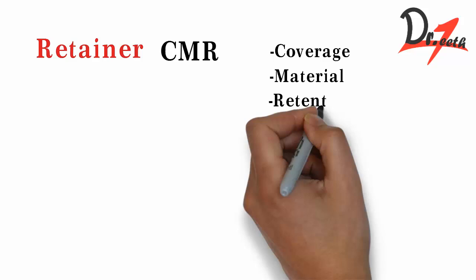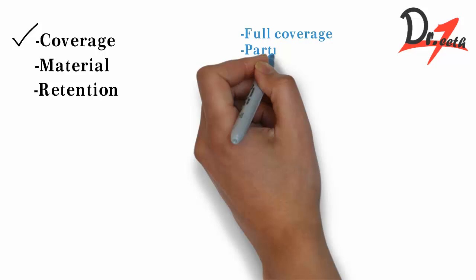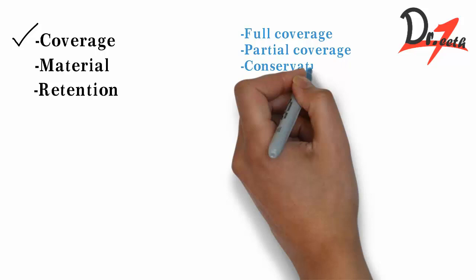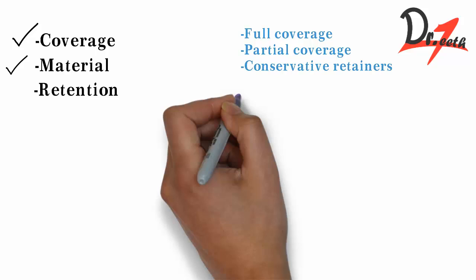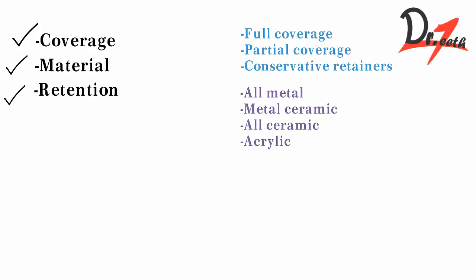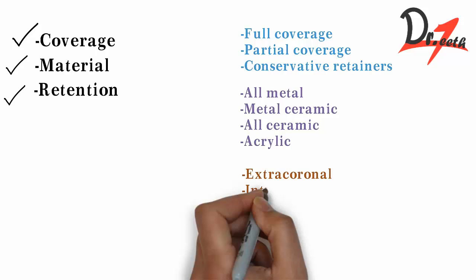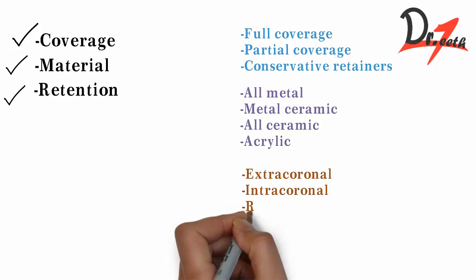Retainers are classified into three types based on coverage, material, and retention — CMR. Based on coverage, we have complete coverage or full veneer retainer, partial coverage or partial veneer retainer, and conservative retainers which are given in anterior teeth as they cannot take more load. Based on material, we have all metal, metal ceramic, all ceramic, and acrylic retainers. Based on retention, we have extracoronal retainers that take retention from the external surface of the tooth, intracoronal retainers that obtain retention from within the coronal tooth structure such as inlays and onlays, and radicular retainers that obtain retention from within the root of the abutment.